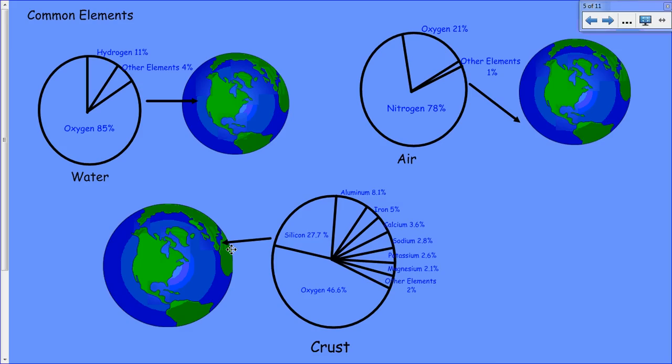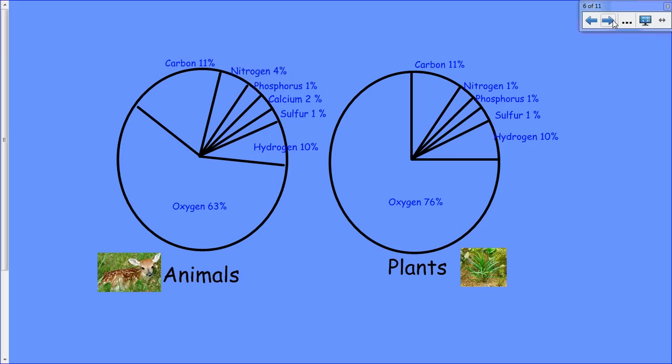If we're looking at the crust of Earth, almost half is oxygen, but we have almost 30% of that is silicon plus small amounts of many other elements. Living things also contain different elements. Plants and animals are mostly made up of oxygen, but they also have hydrogen, carbon, plus other elements in smaller amounts.